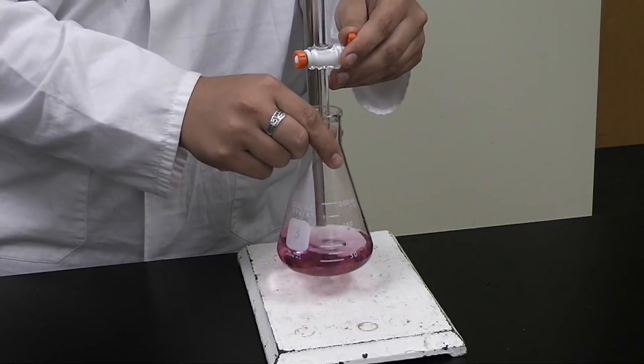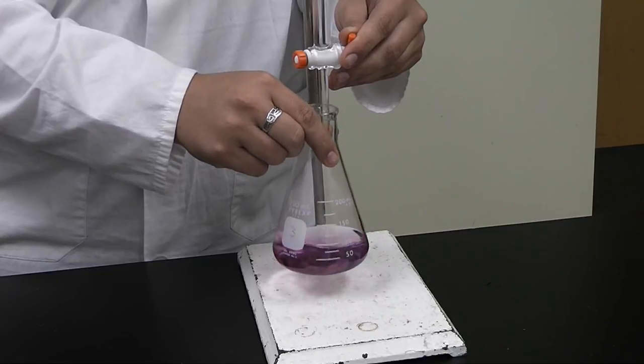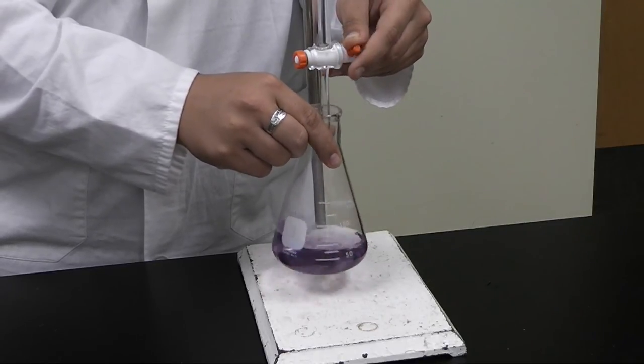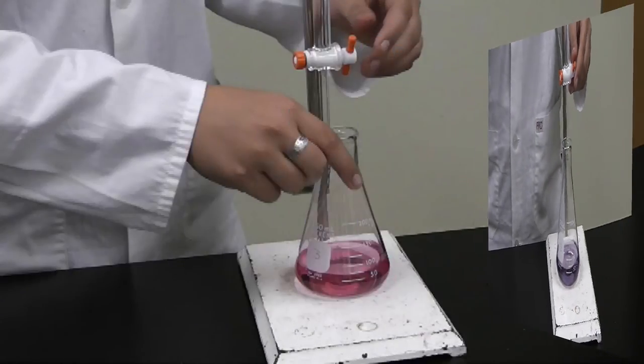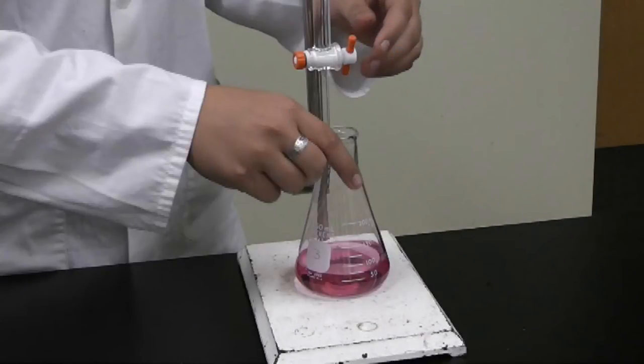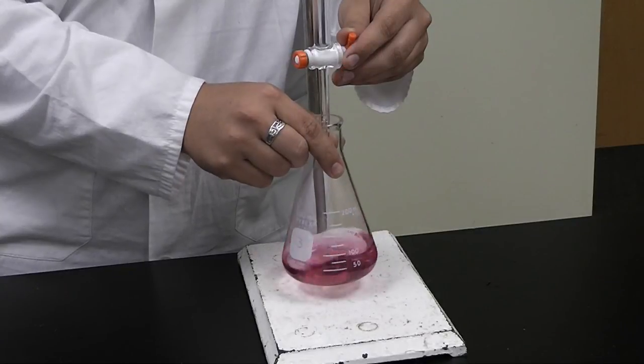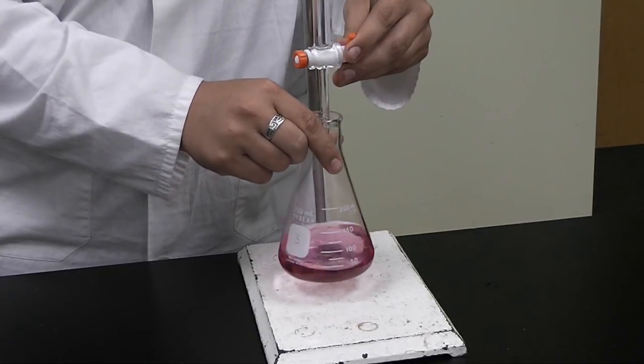When you begin to see a change in color, as you see here, turn the stopcock to closed and put the solution down. Watch your solution. If it reverts back to its original color, you simply need to add a half a drop or a drop more and it should reach its end point.